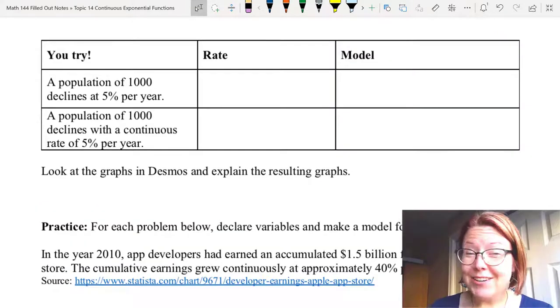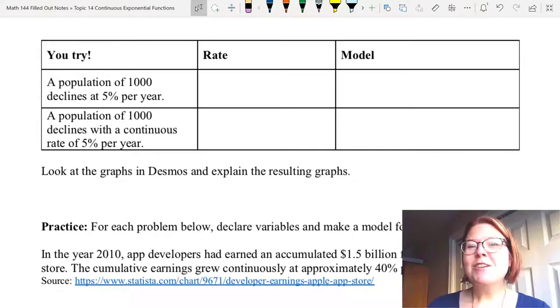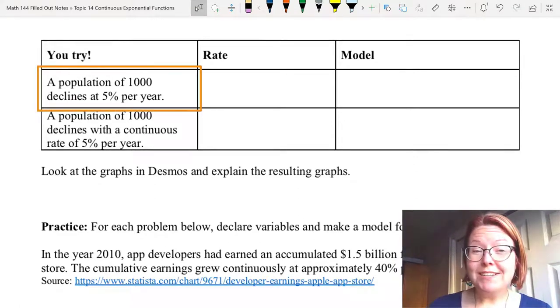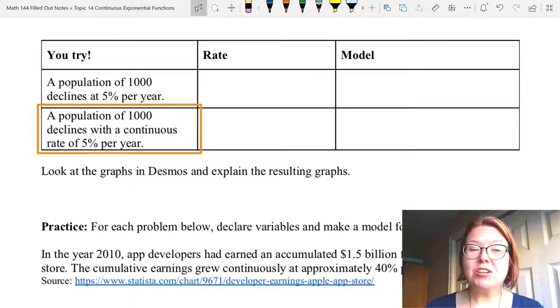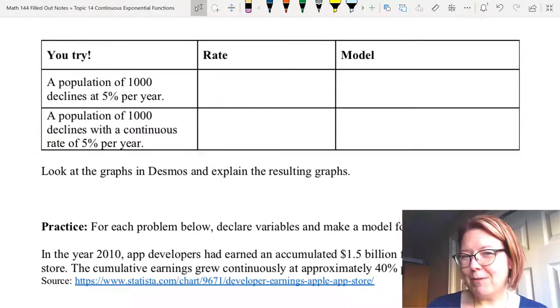Now here's a set of scenarios for you to try. I want you to write the rate and a model for each of these scenarios. Scenario one, a population of 1,000 declines at 5% per year. Scenario two, a population of 1,000 declines with a continuous rate of 5% per year. Pause the video, write them out, come back when you're finished.